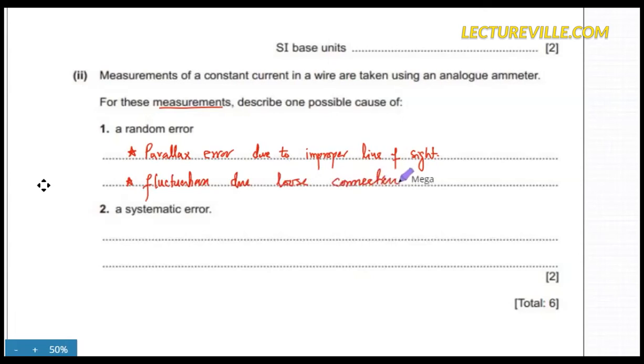Systematic error: for any analog meter, the most common systematic error is zero error. So zero error is a systematic error.